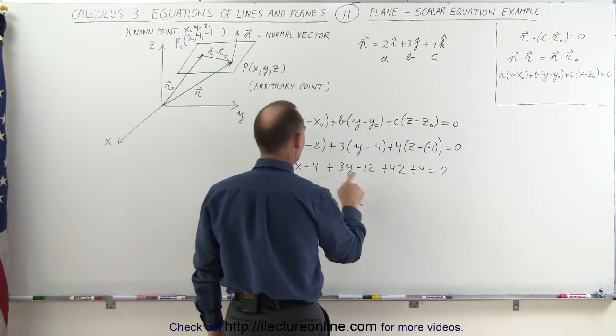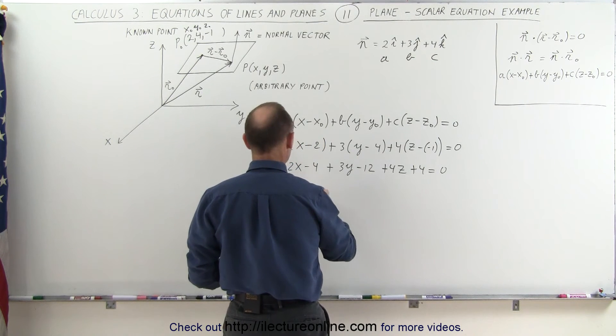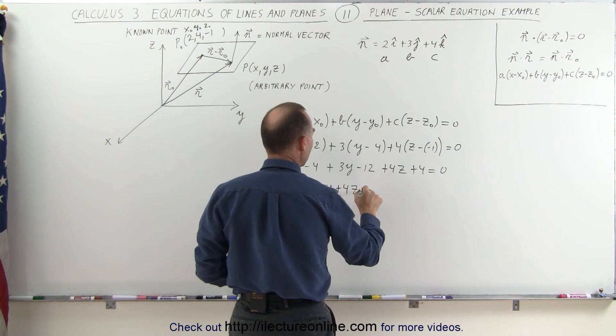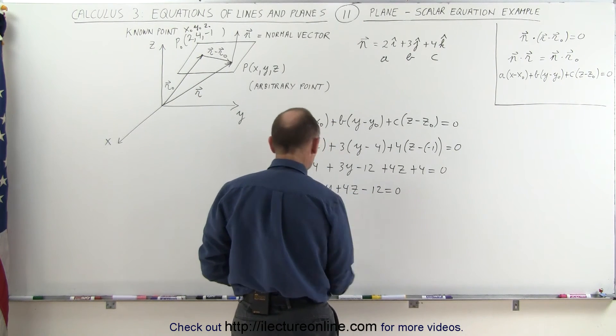Combining all the constants, we have minus 4 plus 4, that cancels out. We have minus 12, so 2X plus 3Y plus 4Z minus 12 equals 0.